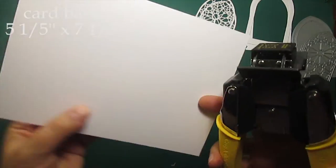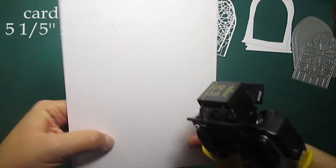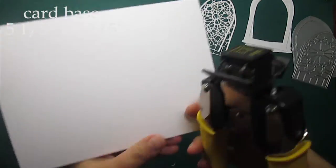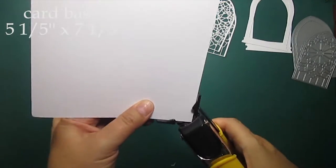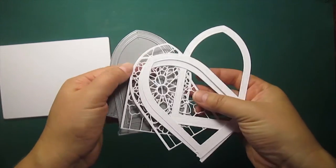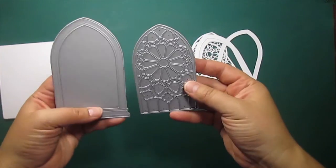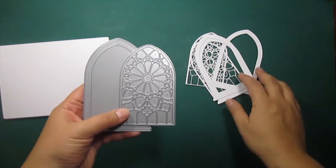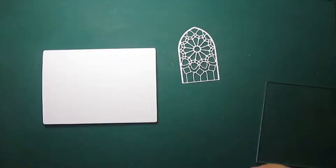I'm starting with a white card base and I'm rounding its corners. I'll be using this Gothic window dies by Poppy Stamps. We'll need three window casings and two lacy insets.